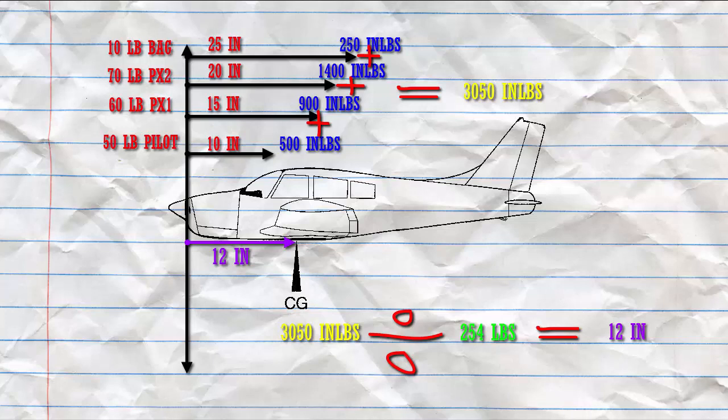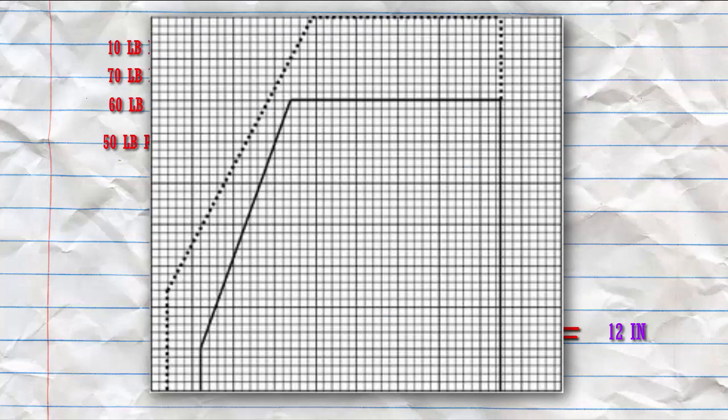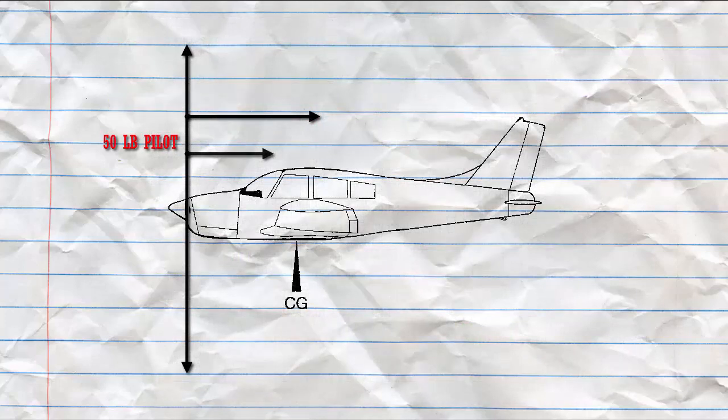So once we have this information how do we know if we are within limits? Well we have different charts and graphs to be able to calculate this. As you can see here we have what's called a center of gravity moment envelope chart. And it's a graph showing the CG moment limits for various gross weights. Acceptable limits are established as an area on the graph. The area is called the envelope. Weight is on the vertical axis and moments on the horizontal axis. So we would take our CG of 12 inches and trace it across the bottom of the graph to 12 inches. And then we would trace up to our total weight of 254 pounds and we would be able to look at the envelope and tell if we are within limits or not. And as you can see we are within the CG envelope and also within the weight limit. And this completes our brief lesson over weight and balance. Thanks for watchin'.